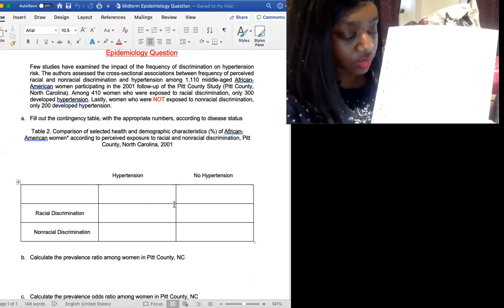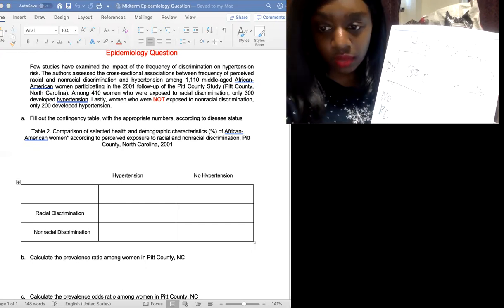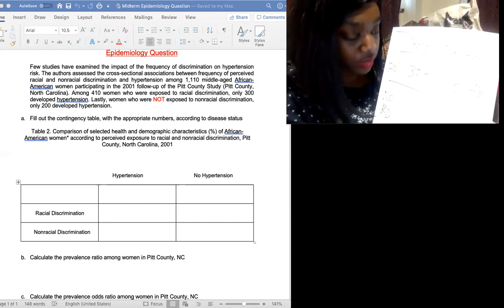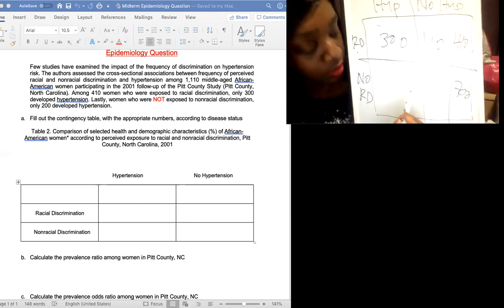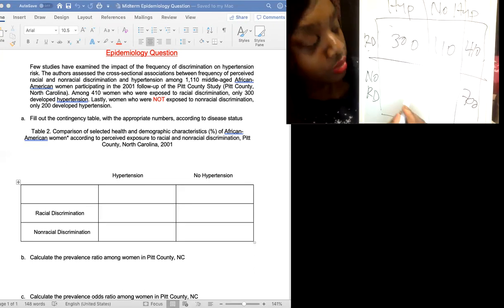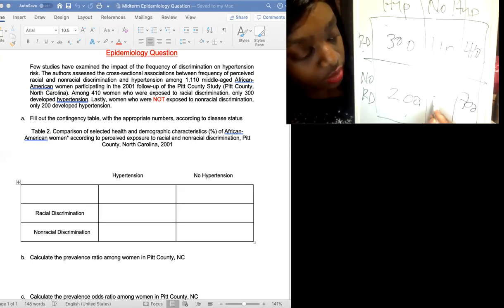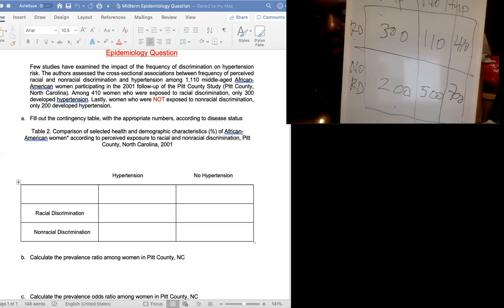And then we have 1,110. So that's the total down here. So we have to subtract minus 410. 1,110 minus 410, that gives us 700 for people who didn't face non-discrimination. And then people who are not exposed to non-discrimination only 200 develop hypertension. So that's 200 here. And then you have 500. So this is our two by two table that I drew out.